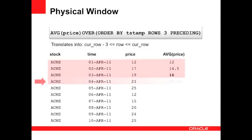This process continues until we get to the fourth row. This is where our window is now at its maximum size, the current row plus three preceding rows.